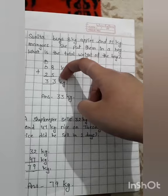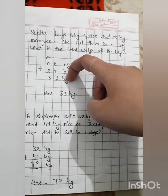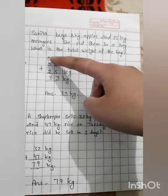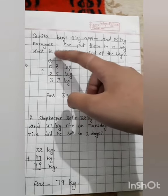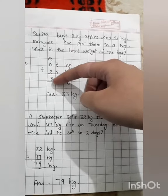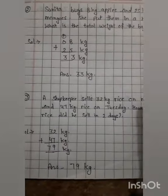In the answer, we will write kg. 8 plus 5 is 13. One carry and we write 3 here. 2 plus 1 is 3. Our answer is 33 kg.